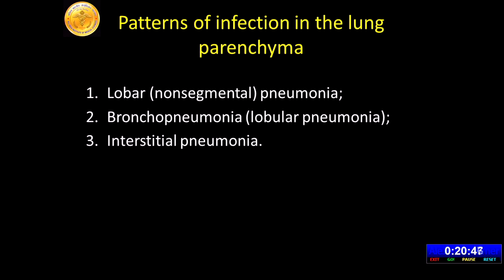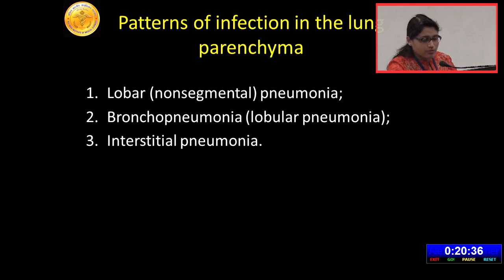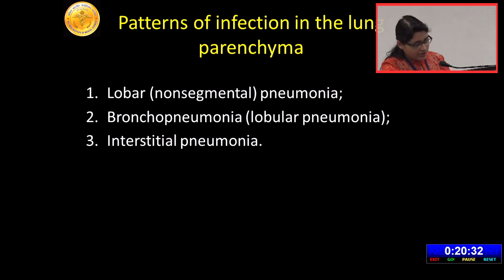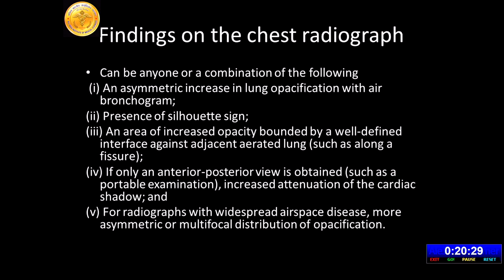What are the patterns of infection in the lung parenchyma? You can have three patterns of pneumonia: lobar pneumonia, which is usually non-segmental and the entire lobe will be involved; bronchopneumonia, also called lobular pneumonia; and interstitial pneumonia. What are the findings that you can see on a chest radiograph? It can be any one of these or a combination of these.